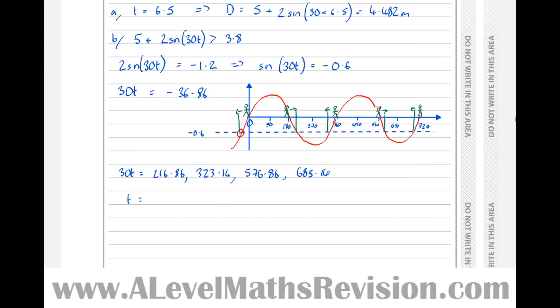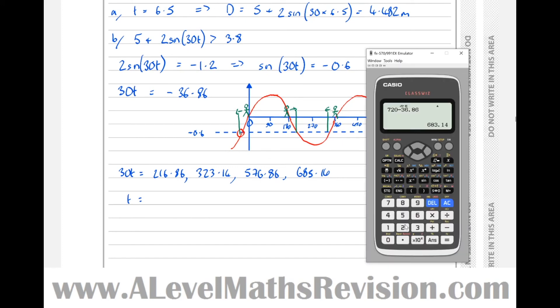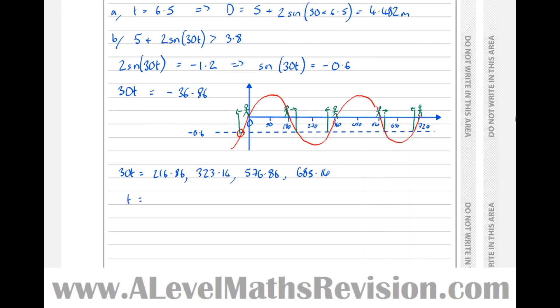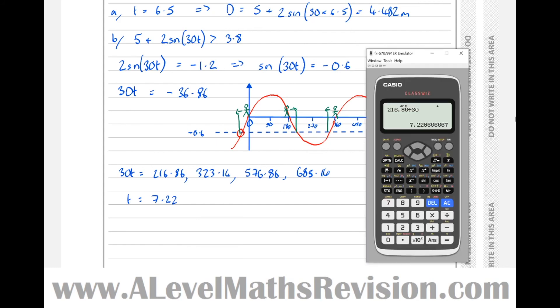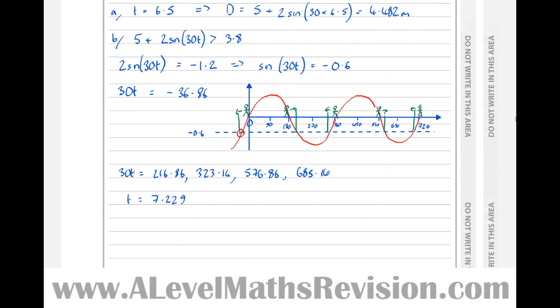Dividing each of these by 30 gets the time when the tide is 3.8 meters. So 216.86 divided by 30 is 7.229, which corresponds to this solution here. We can see that's when the tide's going down, so from here down to here, then back up again—the boat can't go out then. The boat is going to be able to get out at the next solution, which is there.